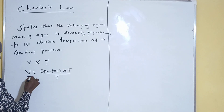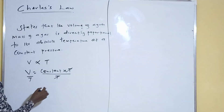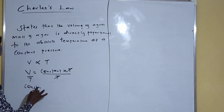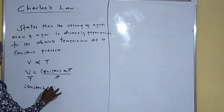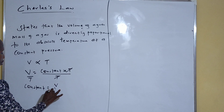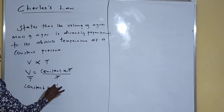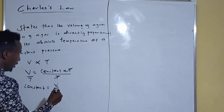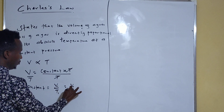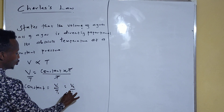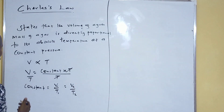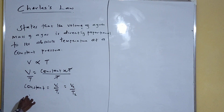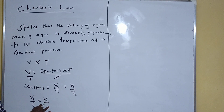To isolate the constant, divide both sides by T, giving us: constant = V / T. Let's call this V1/T1 for the initial state and V2/T2 for the final state. So we are going to use: V1 / T1 = V2 / T2 for our calculations.